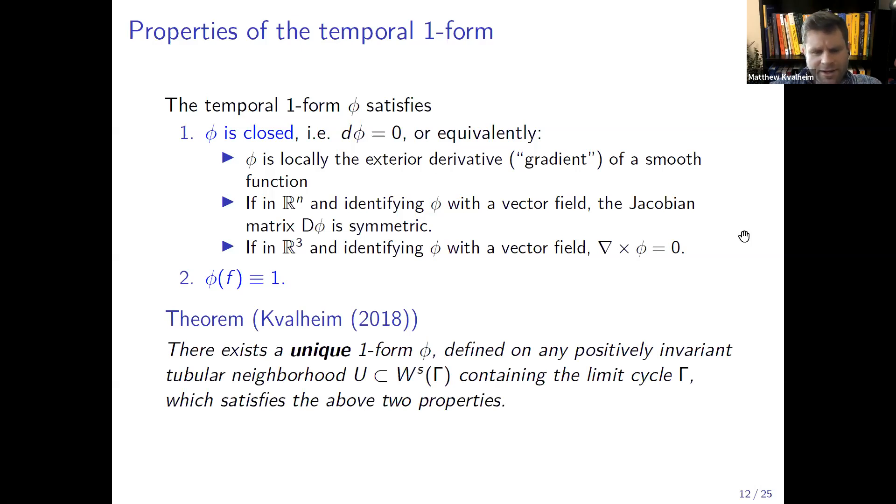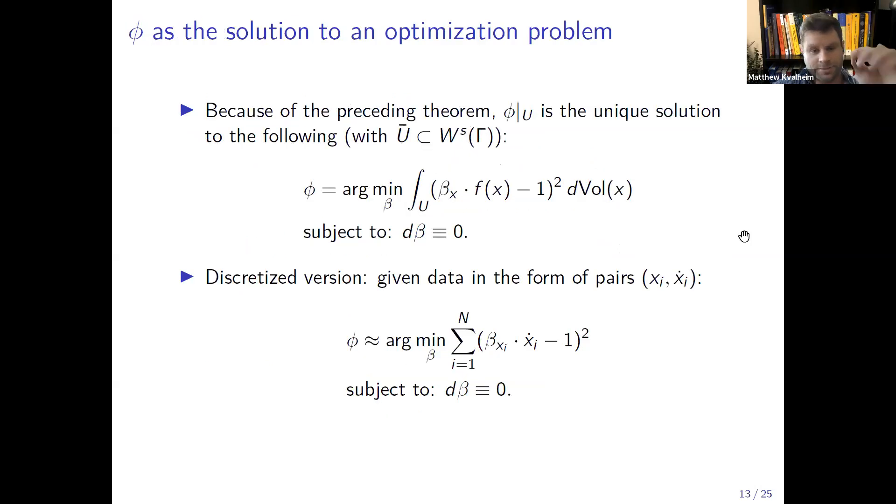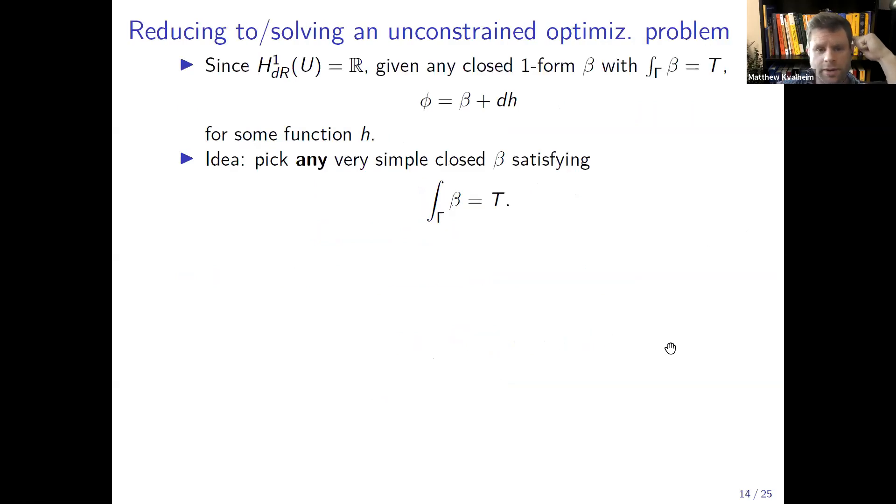In my thesis I proved that there's actually a unique one form defined on any positively invariant tubular neighborhood containing a limit cycle which satisfies the above two properties, and so it's got to be the temporal one form. But the important point is that these are local ones. One is a pointwise property and one is an infinitesimal property, and so these two properties kind of help our algorithm. Because of the proceeding theorem we can write the temporal one form as the unique solution to this optimization problem here, because the integrand just identically equal to zero for the temporal one form. And we can discretize the integral by writing it as a sum.